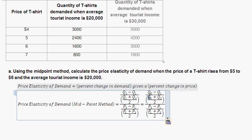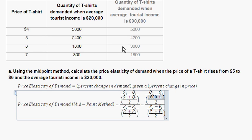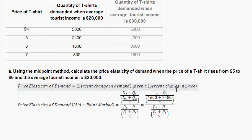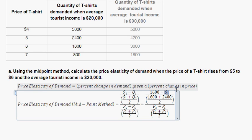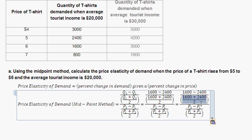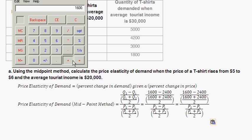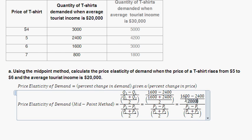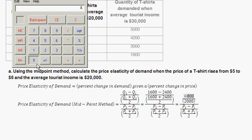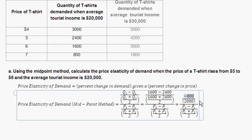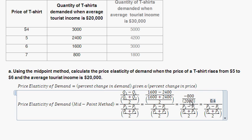We're going from $5 to $6. At $5, the quantity is 1,600. And then at $6, the quantity is 2,400. The denominator for the percent change in price uses $6 plus $5 divided by 2. And 1,600 minus 2,400 gives negative 800, so the numerator for percent change in quantity is negative 800.